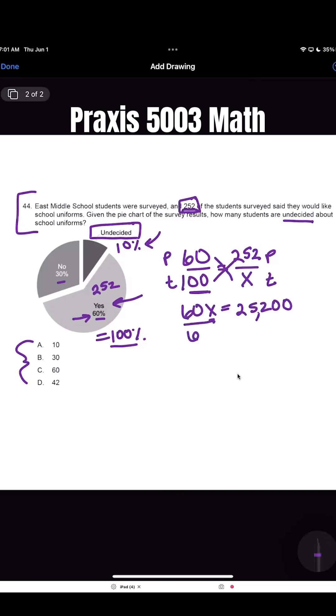So let's solve for X and I get X equals 420. Multiply this by 0.10, and when I do, I get X equals 42, making D the correct answer.